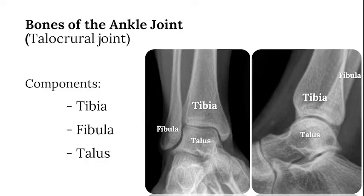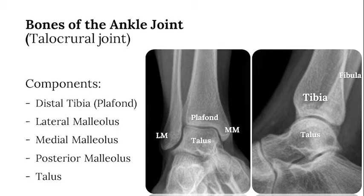The ankle joint, also known as the talocrural joint, is made up of three bones: the tibia, the fibula, and the talus. More specifically, the distal tibia is known as the plafond. The distal projection of the fibula is known as the lateral malleolus. The medial projection of the tibia is the medial malleolus, and the posterior malleolus is the posterior aspect of the tibial plafond.